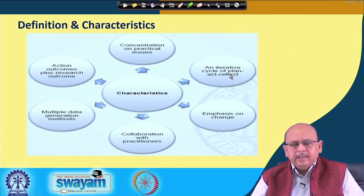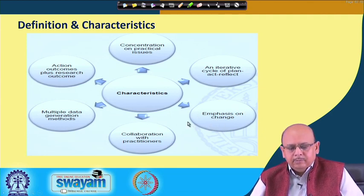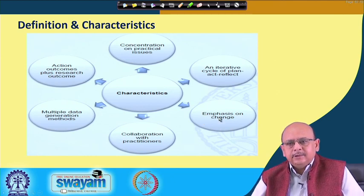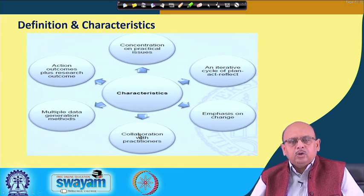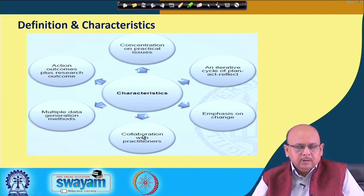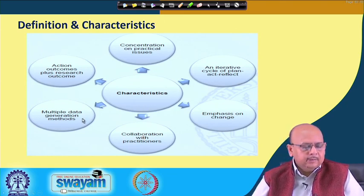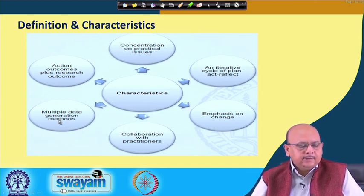For example, when you want to bring about a more flexible manufacturing system for products, you have brought it in — what is the outcome? Then the emphasis is on change. Earlier you have been able to offer a singular product, but with FMS you are going to offer a variety of products — this is a change in your product line. This requires collaboration. The practitioners need to collaborate, especially the employees who are going to work on this new technology. For that, you also need to invest in training and development. Then you generate data related to the outcome — the variety of products produced, the revenue generated — and then you evaluate it.